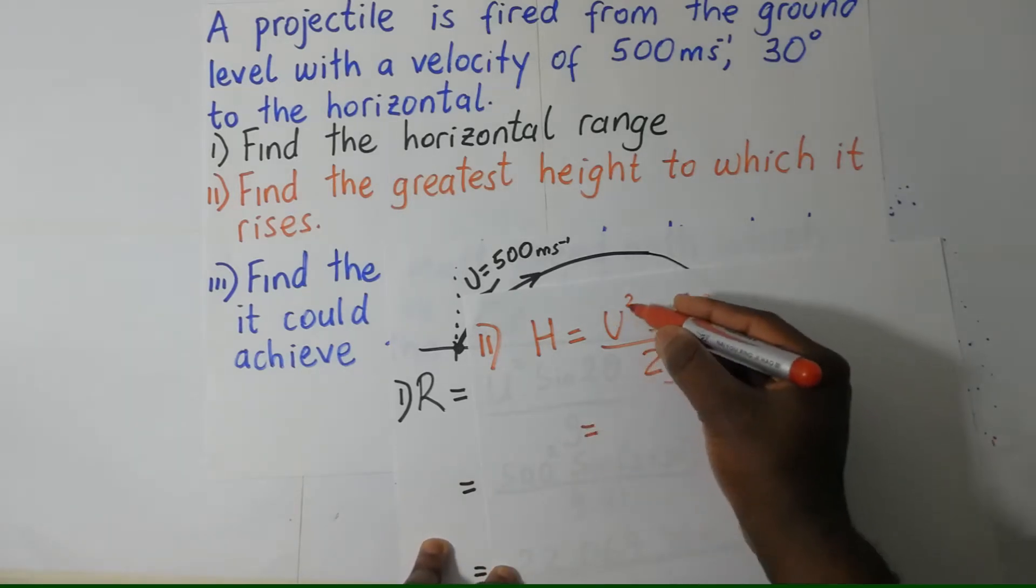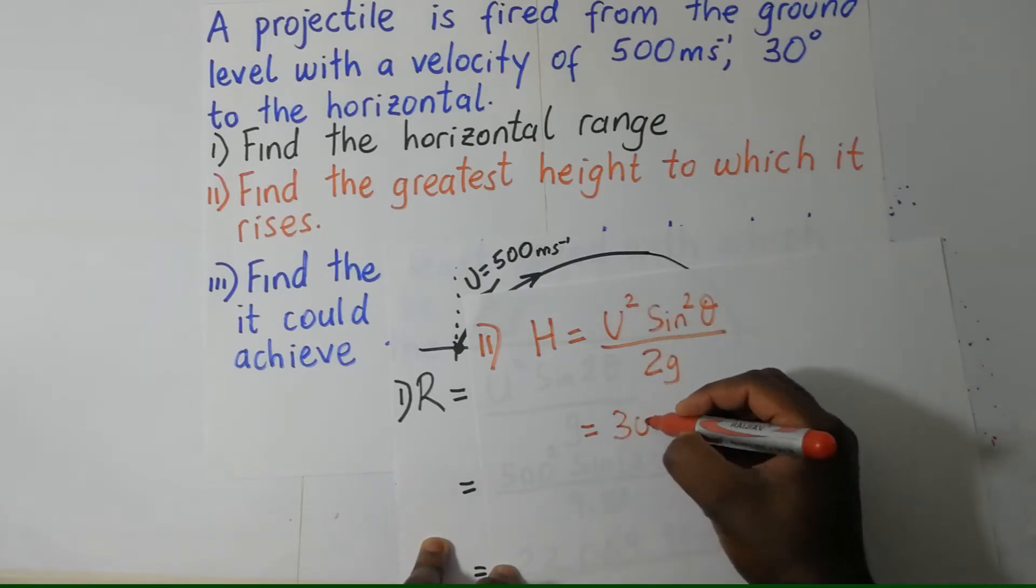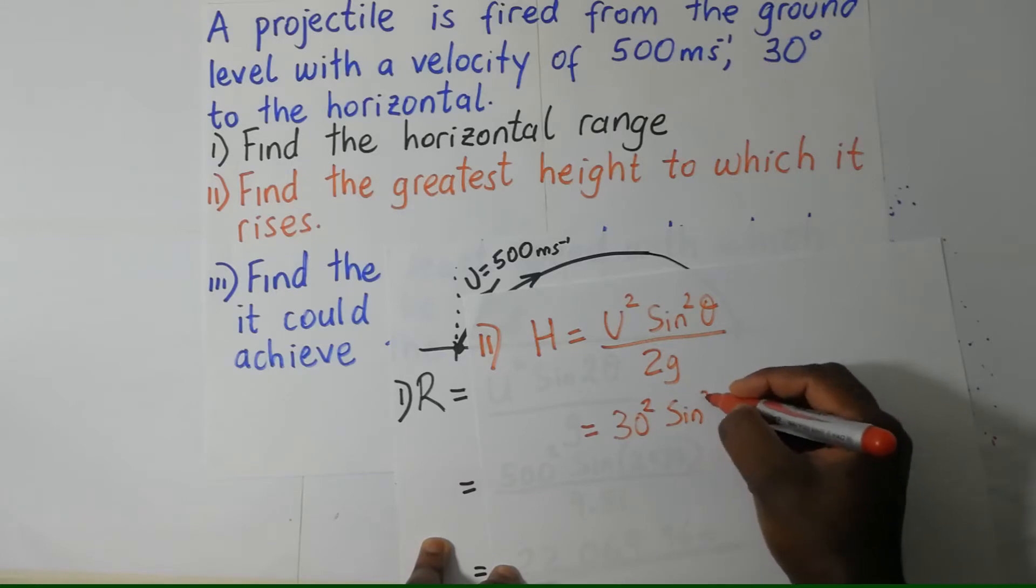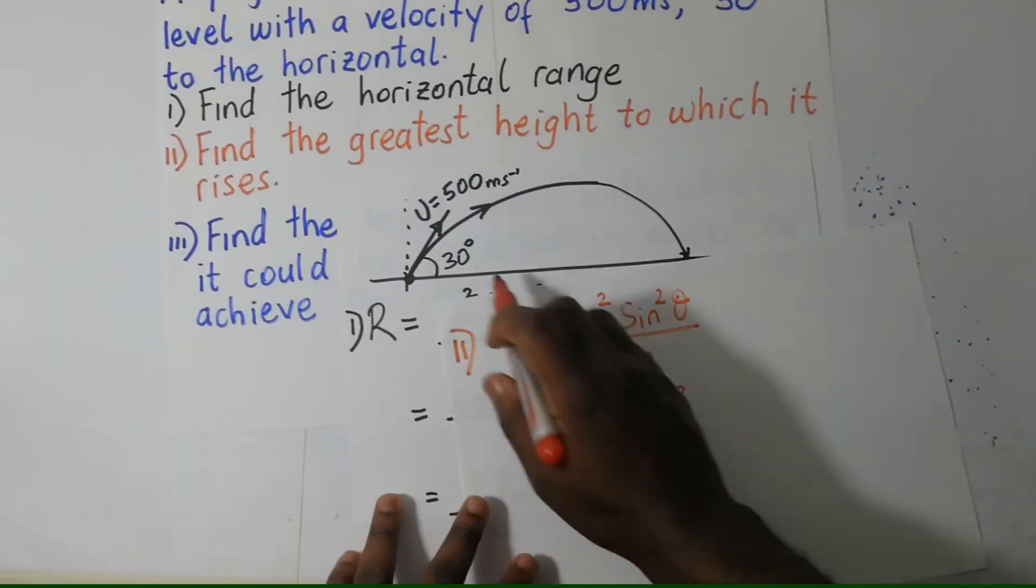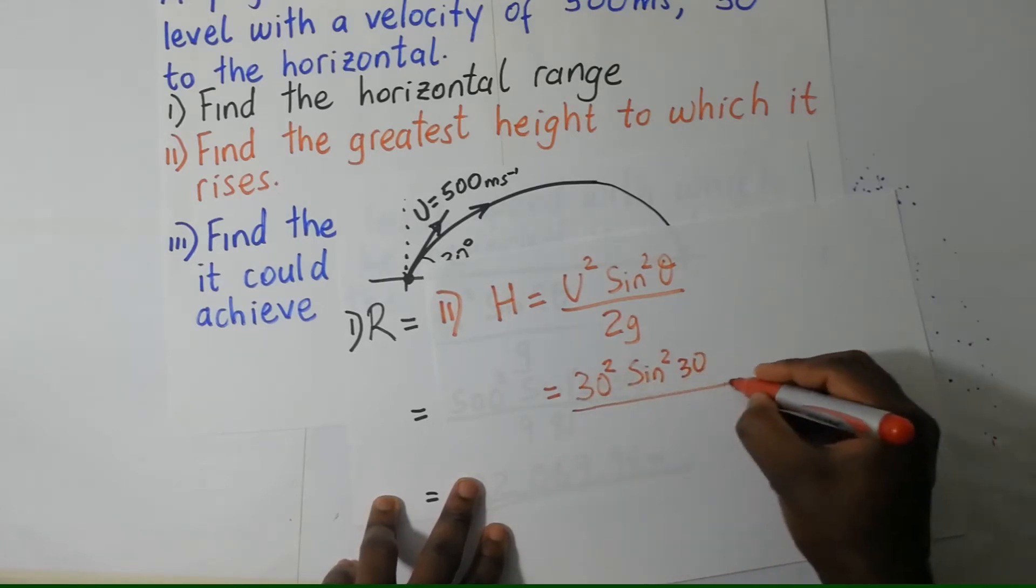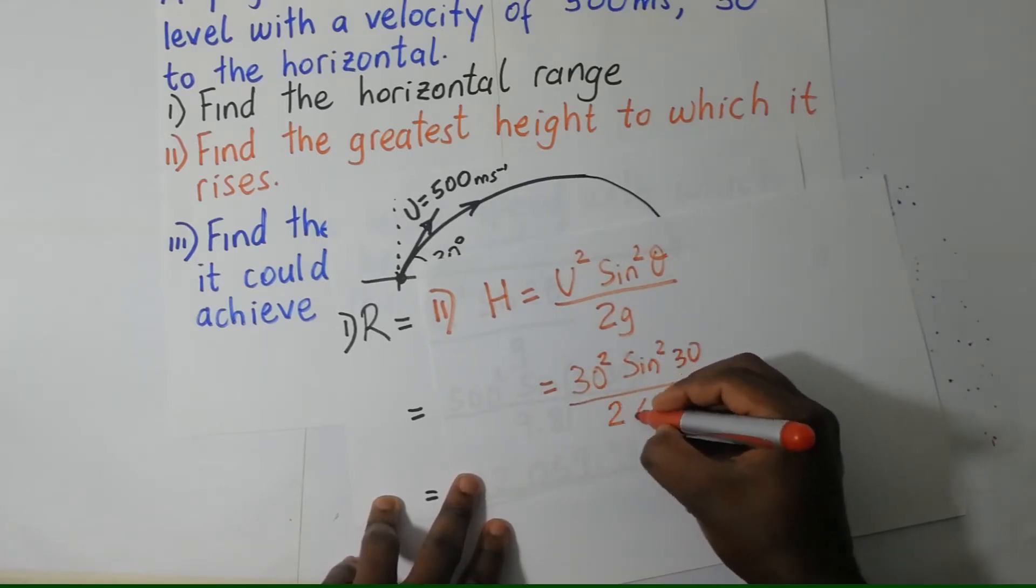This is going to be given by U squared, which is 500 squared, times sine squared times the angle theta, which is 30, divide that by 2G, which is 2 times 9.81.